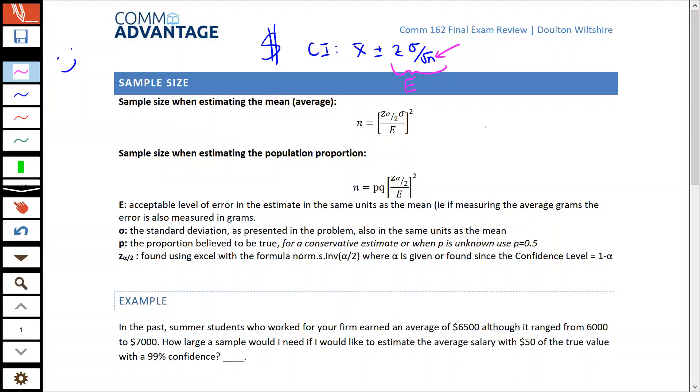It's the confidence interval formula that's been rearranged to solve for n, now that we know about the error, that amount that we want to be within or that we can be off by. When it comes to calculating these, it's really just about making use of these two different formulas. We've got one when we're estimating the mean or average - it's the one with standard deviation in it. And we've got one when we're talking about population proportion - it's the one with P in it.